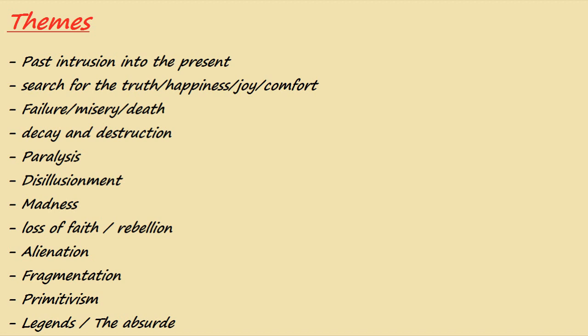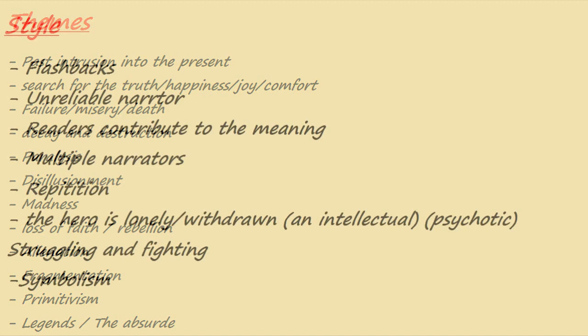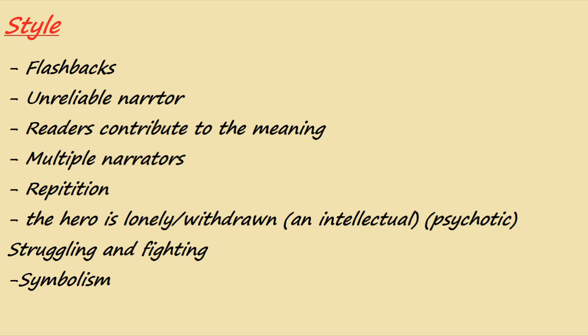Now we move to the style. The writer uses flashbacks — sometimes the story starts in the past, meaning it begins at a point not set within the main timeframe of the story itself. For example, if the story happens between 1920 and 1930, the beginning might start in 1817. This is what we mean by a flashback — going back into the past — but it has a purpose: to give you a piece of information.